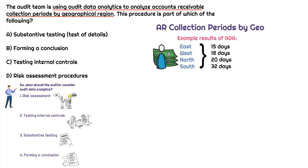Let me give you an example of what the output of the audit data analytics might look like. Here we have the AR collection periods by GEO, and you can see we have east, west, north, and south. The collection period is going to be measured in number of days. We'll look at the collection periods by GEO and assess what the overall trend is, how this compares to the terms they have with their invoices, and whether any particular region stands out as being more risky than the rest.